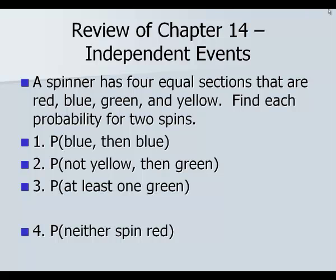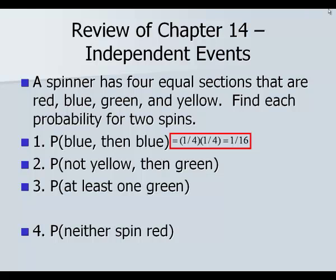Number one, we want first a blue, then we want a blue the second time. The probability of blue is one out of four. The probability of blue again is one out of four. And you want both of those to happen, so you're multiplying. One-fourth times one-fourth is one-sixteenth.